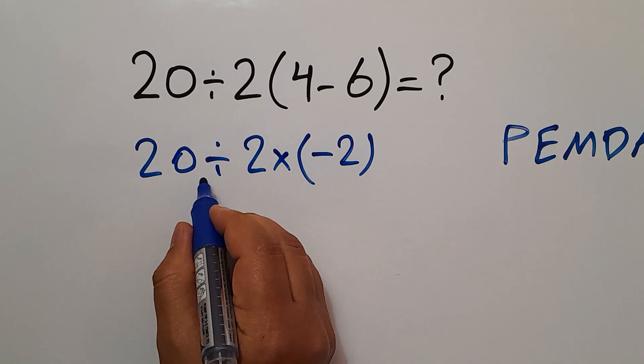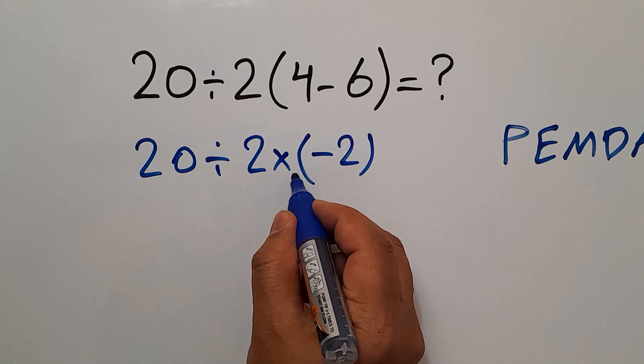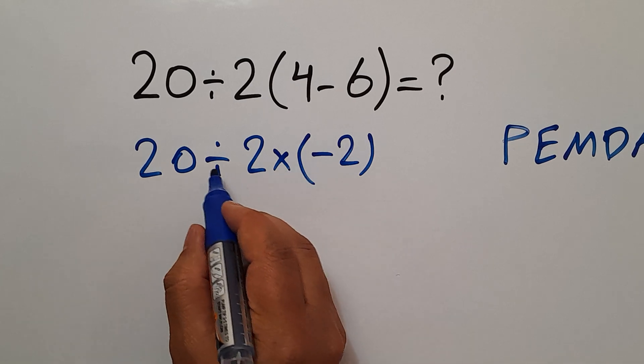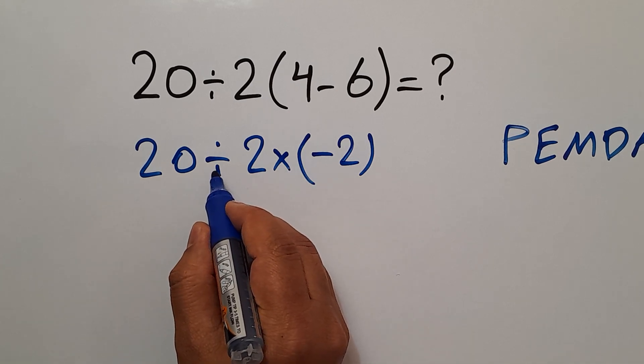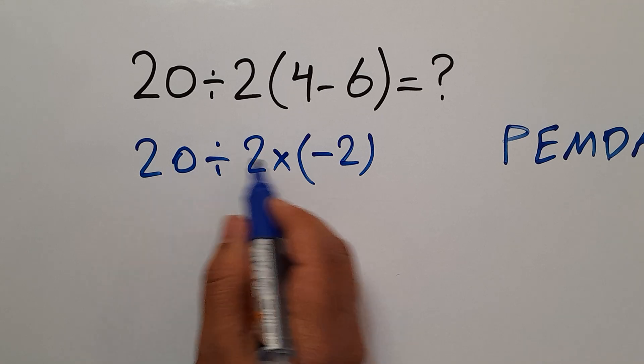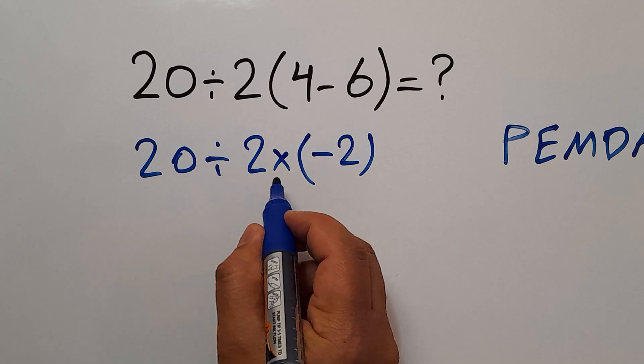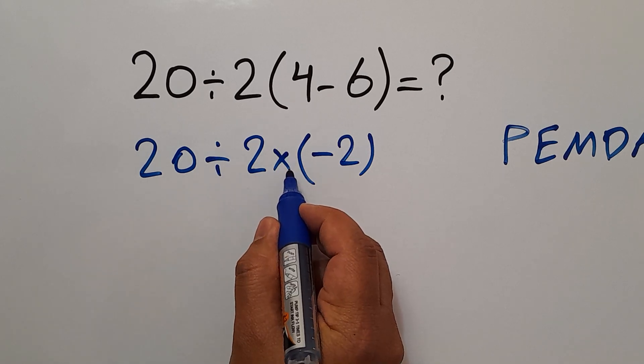Here we have this division and this multiplication. According to the order of operations, multiplication and division have equal priority and we work from left to right. So first we have to do this division and then this multiplication.